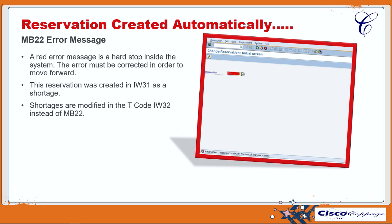The next message is reservation created automatically, no manual changes possible. This is an MB22 error message. The first takeaway is that anytime you see a red error message, that is a hard stop inside the system, and the error must be fixed or corrected in order to move forward.